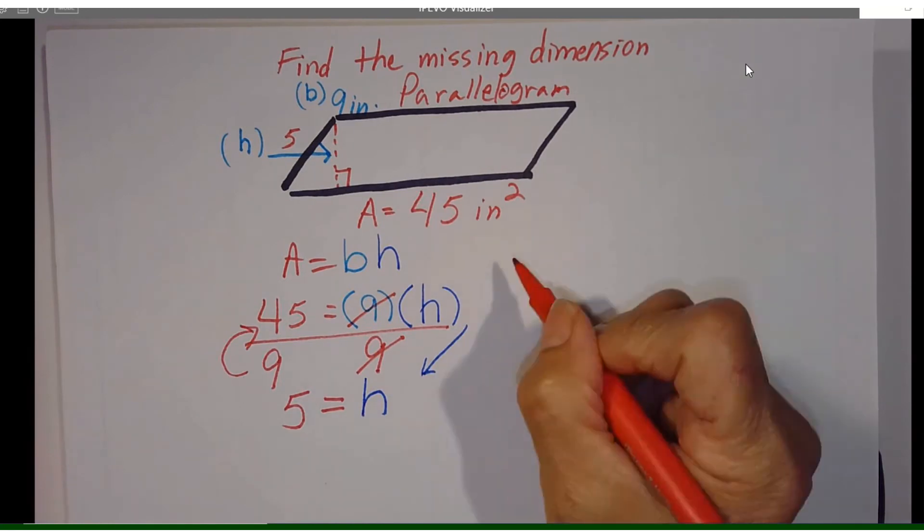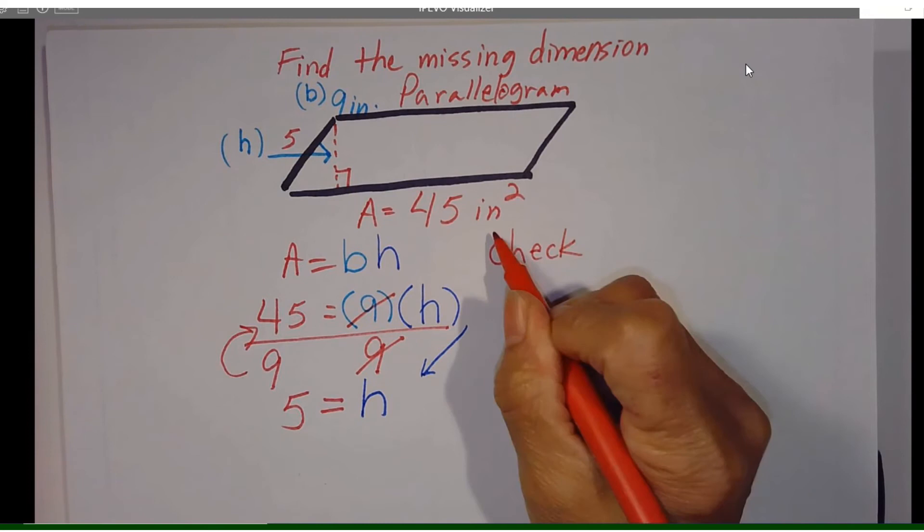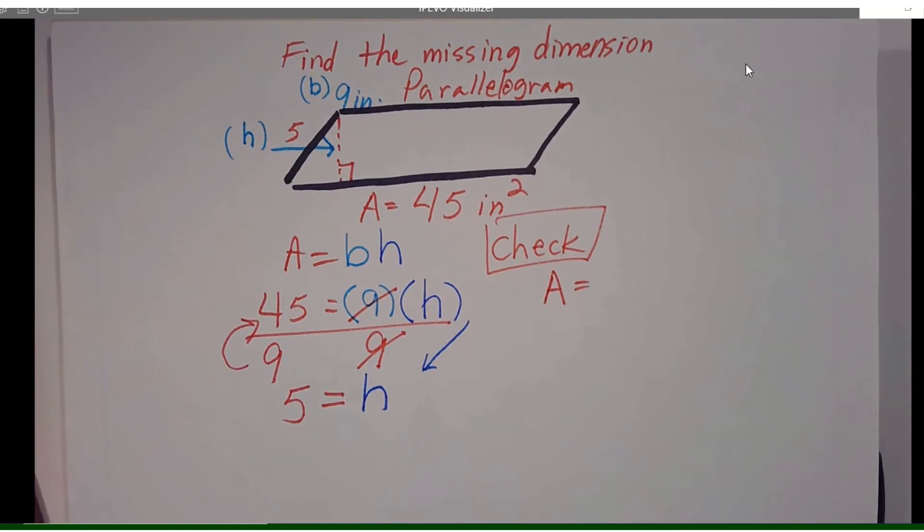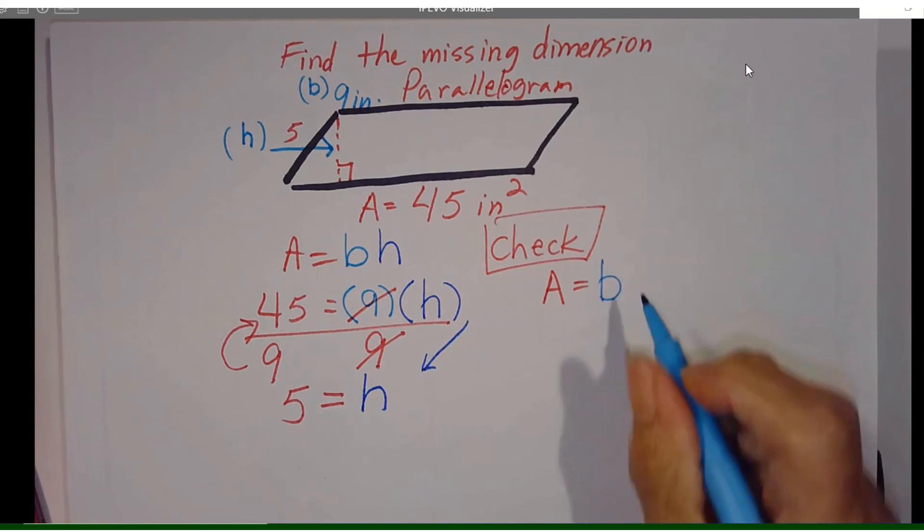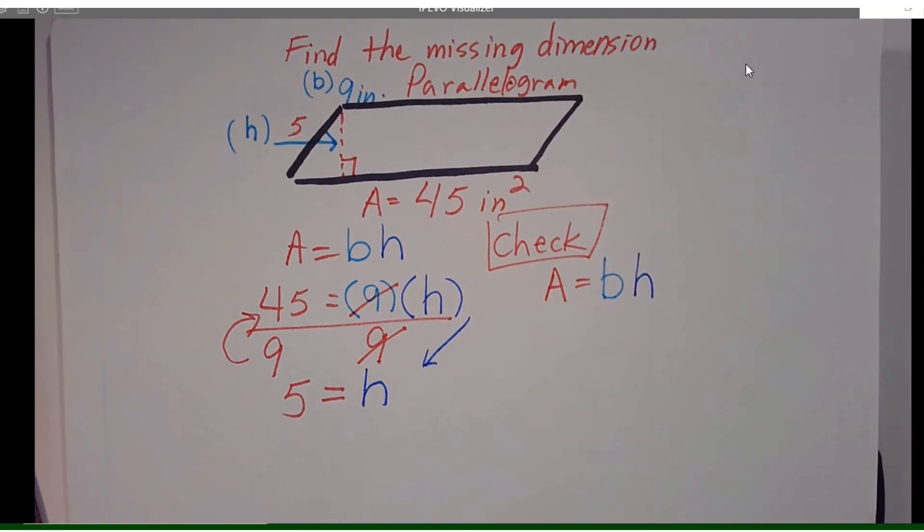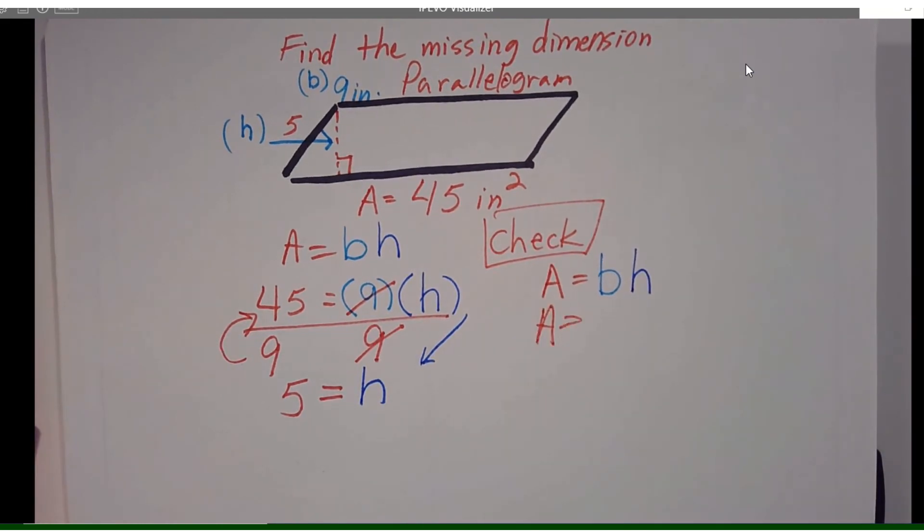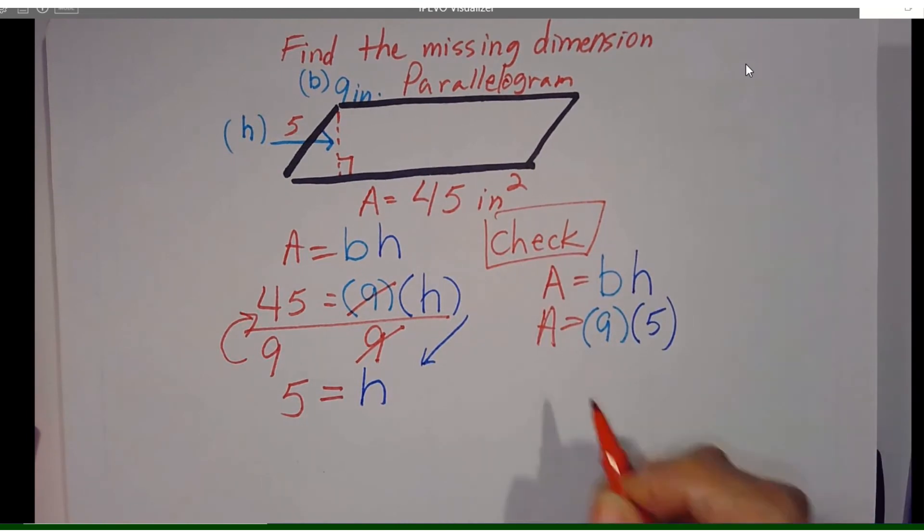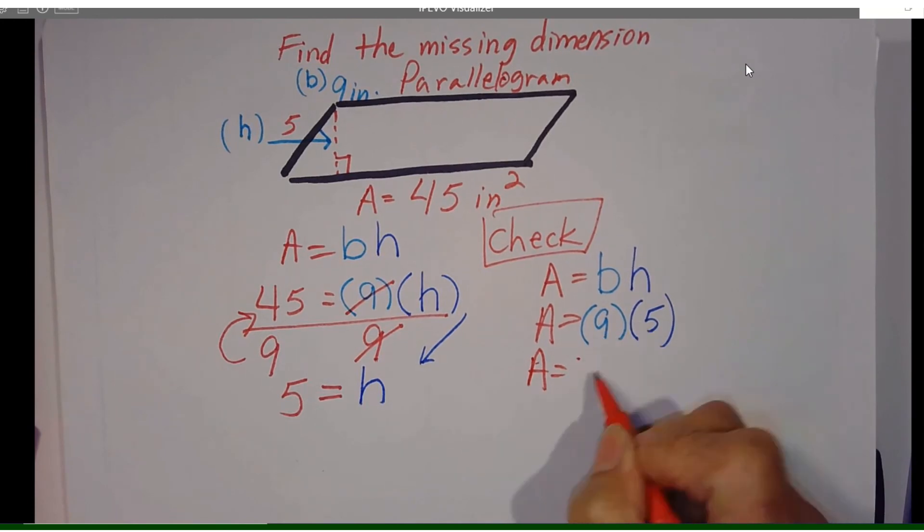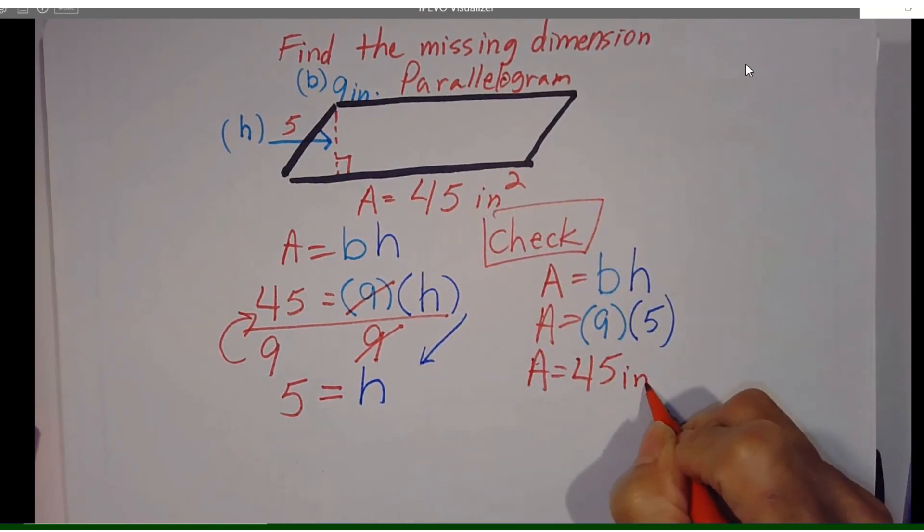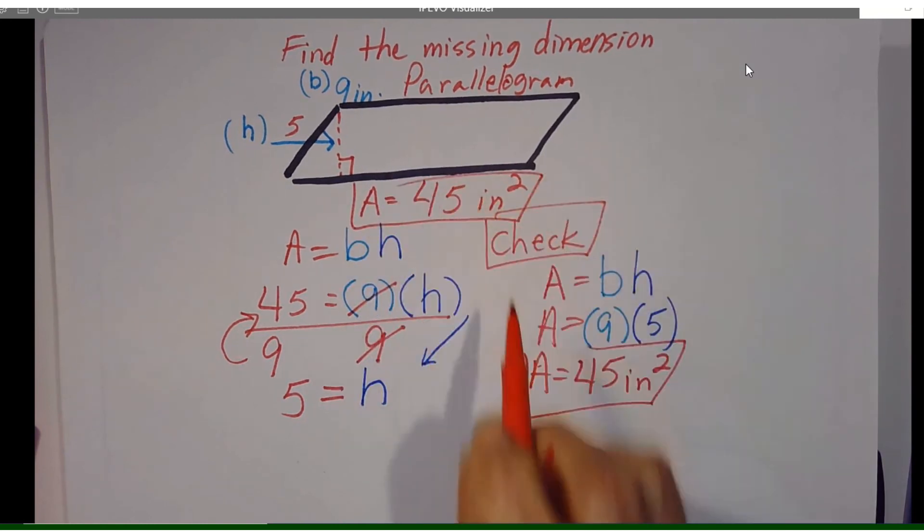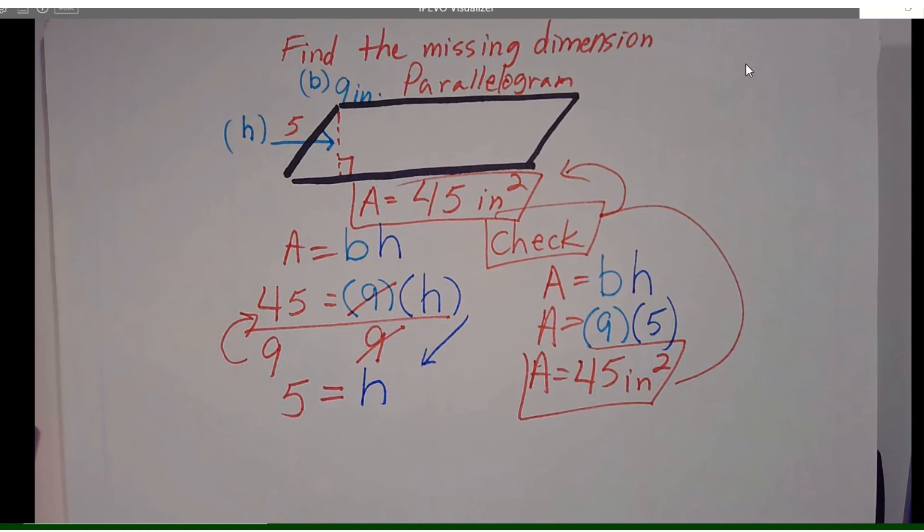To check your work we'll go right over here. Check. I'm going to plug in my regular formula. A equals B times H. Area equals my base is nine. And my height is five. Since we already know it's 45, that's what they're telling us. Area equals nine times five is 45 inches squared. So this answer here matches this answer they originally gave us. So we checked our work and it is correct.